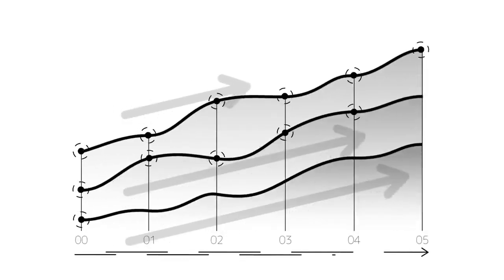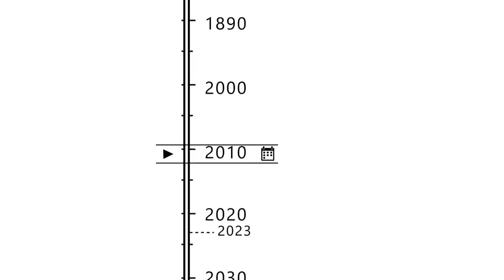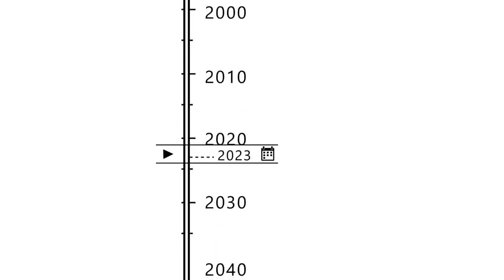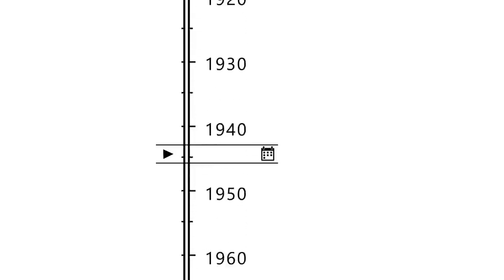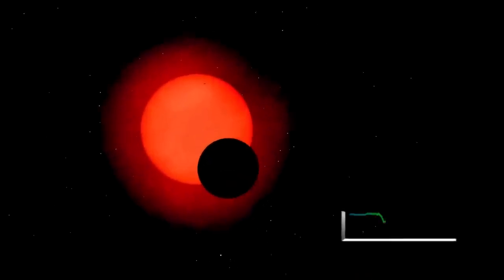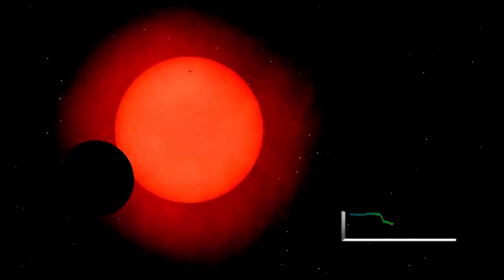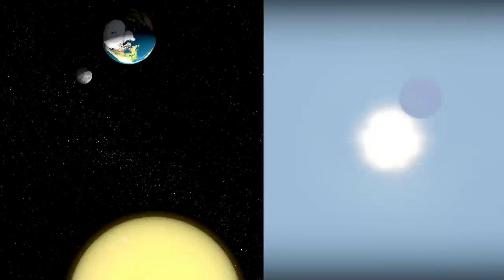Historical records suggest that Betelgeuse hasn't always appeared red. Ancient Roman and Chinese texts describe it as yellow some 2,000 years ago, while Arabic astronomers in the 9th century noted its redder appearance. This shift in color over time is more than an intriguing historical note. It's a marker of the star's ongoing evolution.